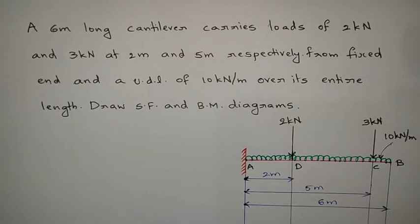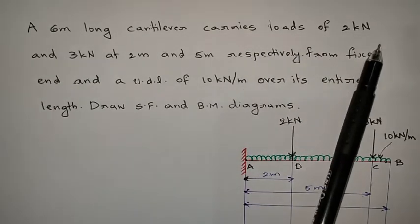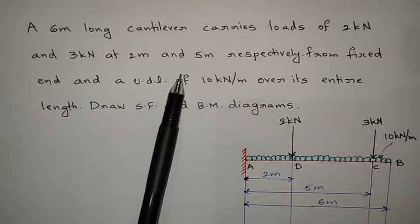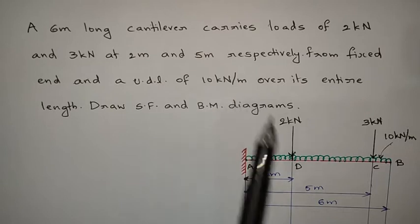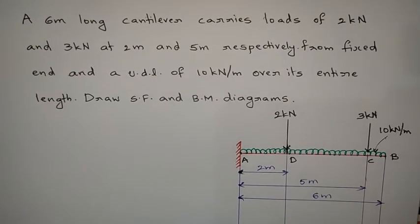Hi everyone. In this video, I am going to solve one more problem on a cantilever beam with UDL and point loads, and we need to draw the SF and BM diagrams. A 6-meter long cantilever carries loads of 2 kN and 3 kN at 2 meters and 5 meters respectively from the fixed end, and a UDL of 10 kN per meter over its entire length. Draw the shear force and bending moment diagrams.